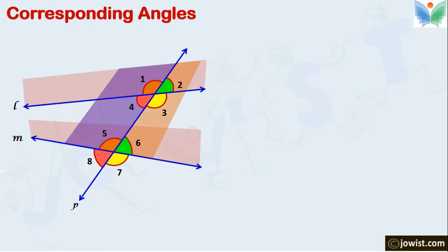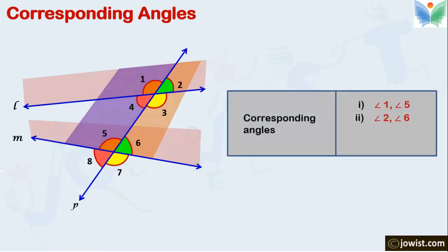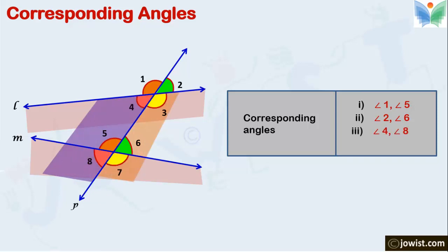Now take the right part of transversal P. The common angles 2 and 6 are corresponding angles. If we take the lower parts and left side, angles 4 and 8 are corresponding angles. Similarly angle 3 and 7 are corresponding angles.